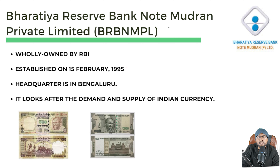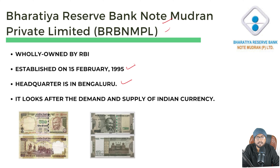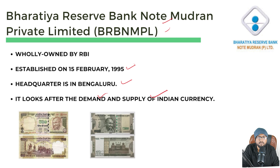Now let's talk about the second subsidiary of RBI: Bharatiya Reserve Bank Note Mudran Private Limited. This subsidiary was established on 15 February 1995 with its headquarter in Bengaluru. Its function is to look after the demand and supply of Indian currency. During demonetization, the replacement of old notes and introduction of new notes was handled entirely by Bharatiya Reserve Bank Note Mudran Private Limited.